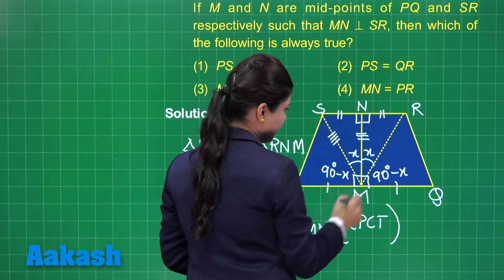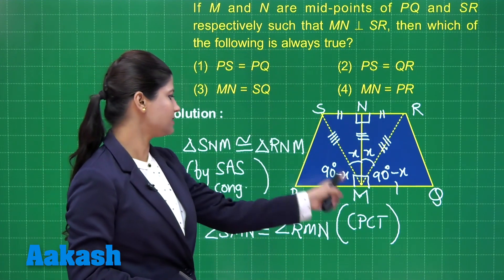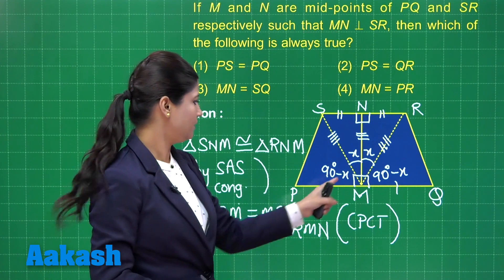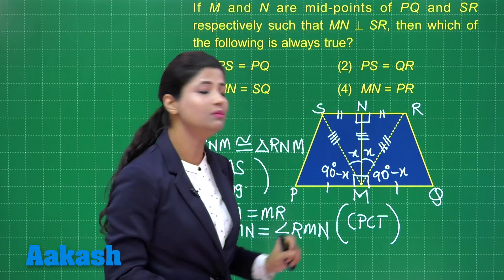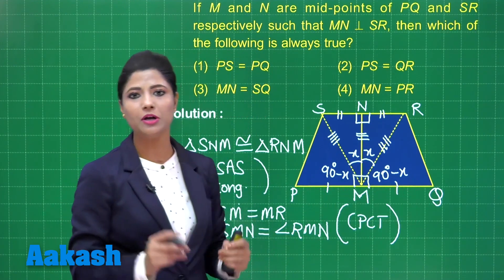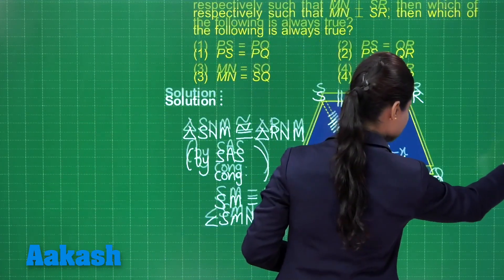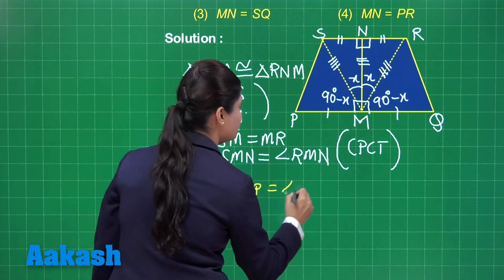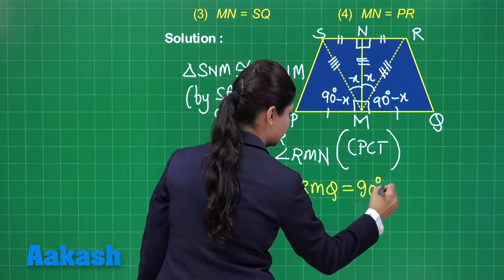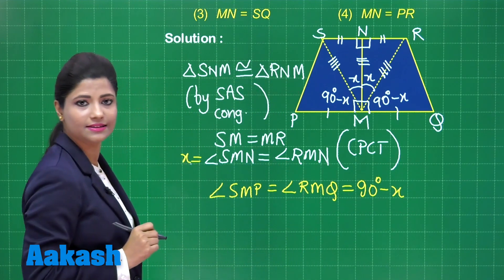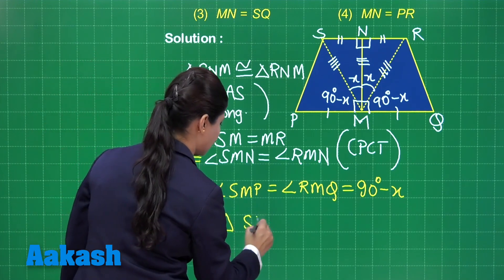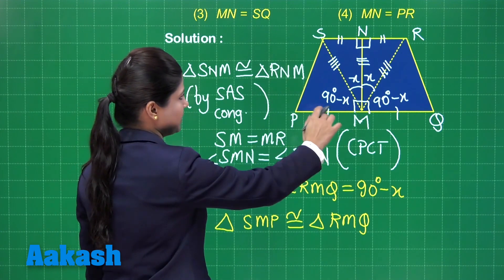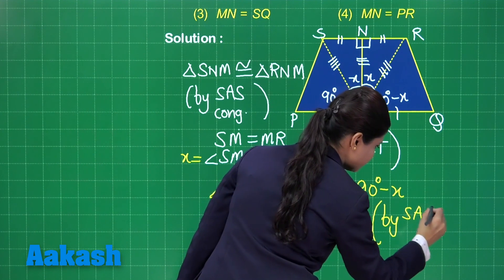We have already obtained that SM equals RM. Now focus on triangle SMP and triangle RMQ. In these two triangles: SM equals RM, angle SMP equals angle RMQ measuring 90 degrees minus X, and PM equals QM. So these two triangles are also congruent by side-angle-side congruence criteria.